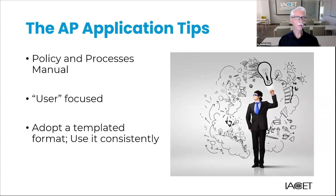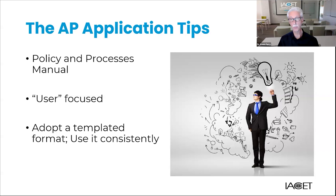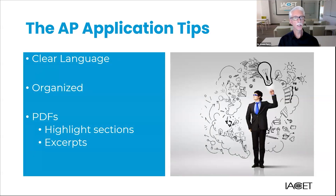Let me close by sharing some accreditation provider application tips that apply to both initial accreditation and reaccreditation. For simplicity and consistency, we recommend you compile your policies and processes into a single policy and processes manual that is made accessible to your staff and other stakeholders. Also, write your policies and processes with the users in mind, not the IACET commissioners — these are designed to be working documents used by your staff or other stakeholders. Try to adopt a templated format and use that consistently throughout — uniformity makes it easier not only for commissioners, but also for the users of your policies and processes. Ensure that all policies, processes, evidence, and narratives are written in clear, concise, simple language.